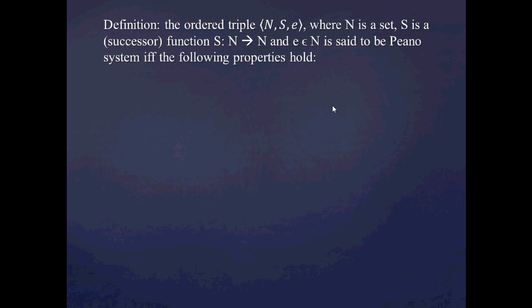Having introduced the intuition behind a Peano system, let's now introduce the definition. The definition of a Peano system is going to be the ordered triple (N, s, e), where N is a set, and s is a successor function which maps the elements of N to elements of N.